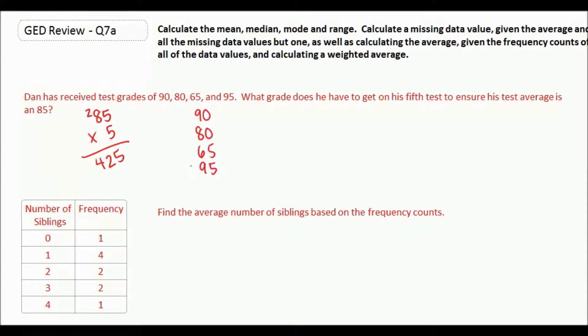That's 18 plus 6 is 24, plus 9 is 33. So so far he has 330 points. He needs 425, he has 330.